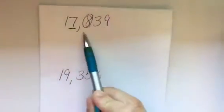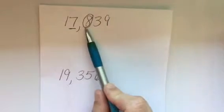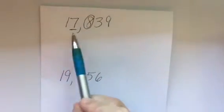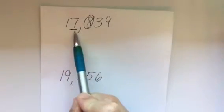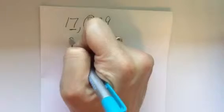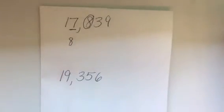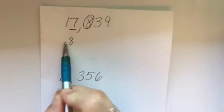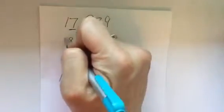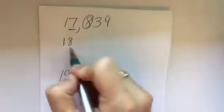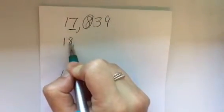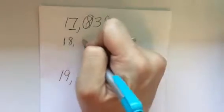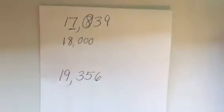We have an eight in the circle — that's five or more, raise the score. So our seven is actually going to raise and turn into an eight. The numbers to the left of that underlined number will stay the same, so the one remains a one, and all the numbers to the right of our underlined number will turn into zeros. So that is 18,000 when we round it to the nearest thousand.